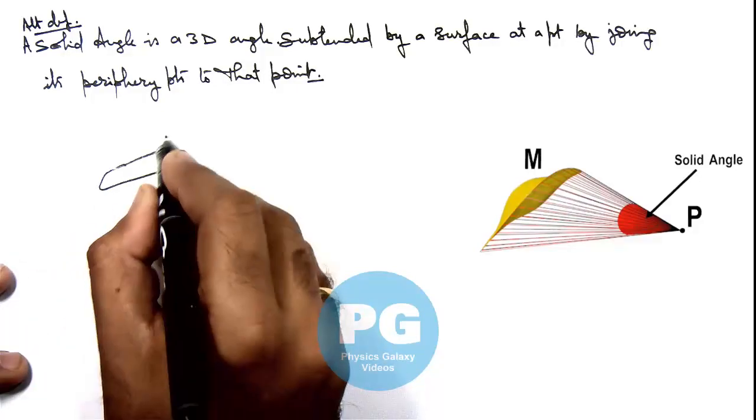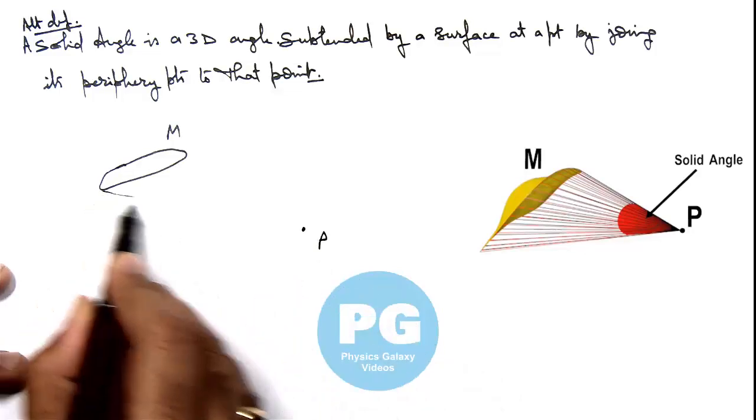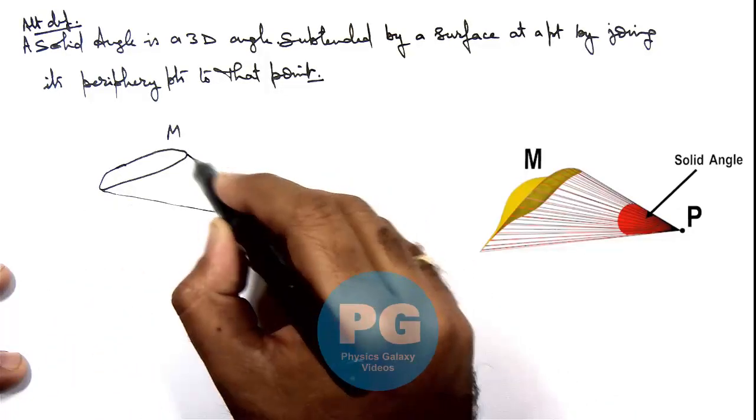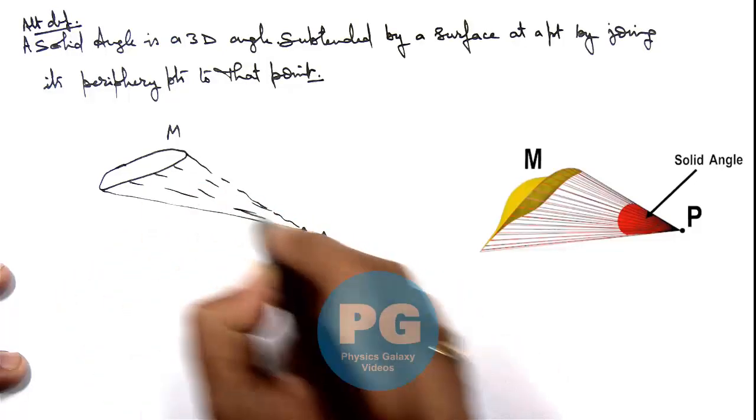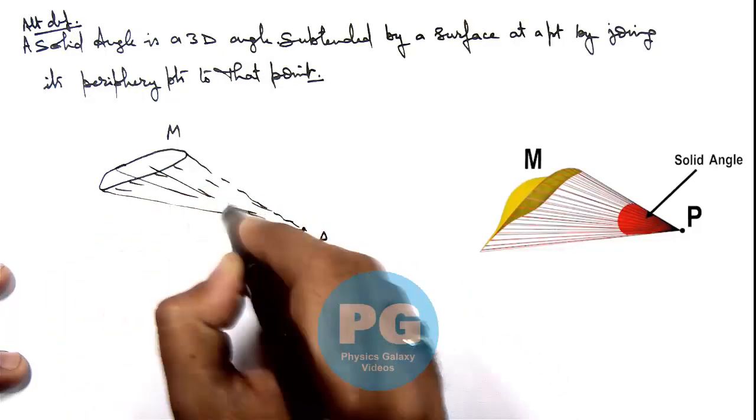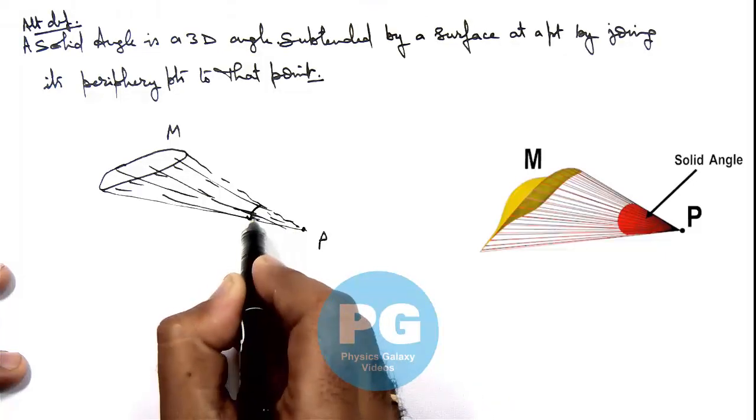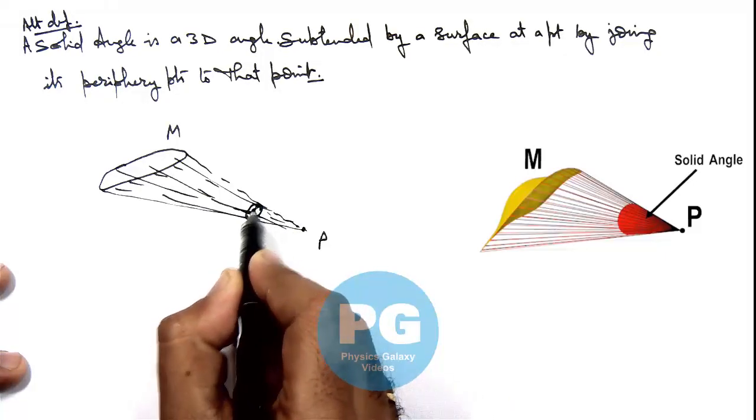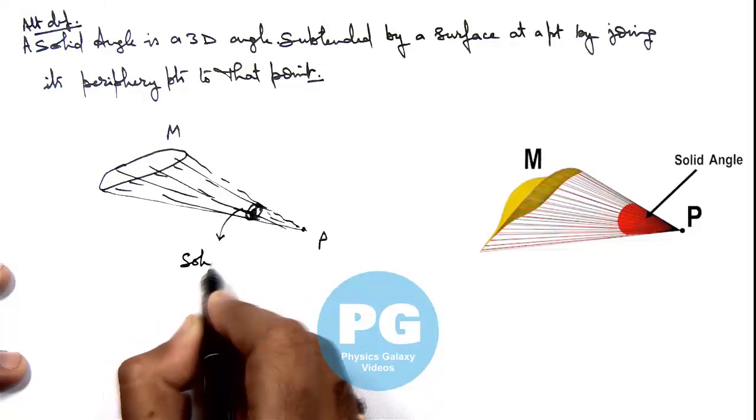Again I try to draw it. If this is a surface M and this is a point P, I can join all points of this surface to P. And you can see this is a 3 dimensional cone type of structure is made. And in this situation, this is the region which is enclosed by this cone. And this is what we call a solid angle.